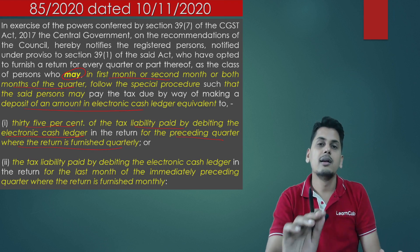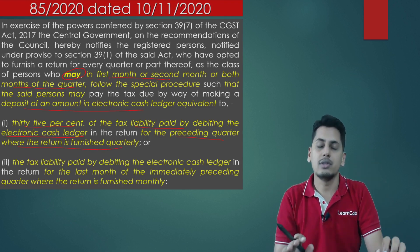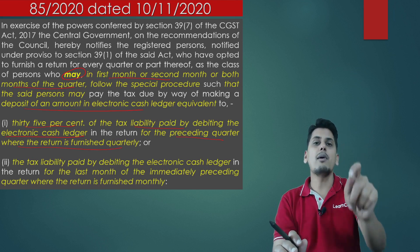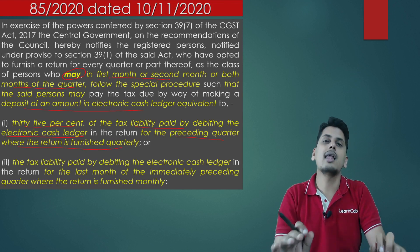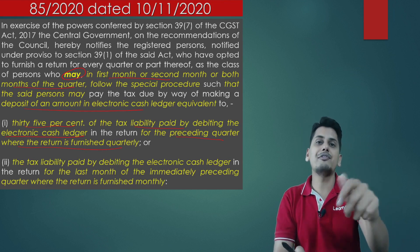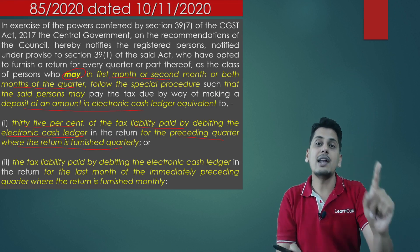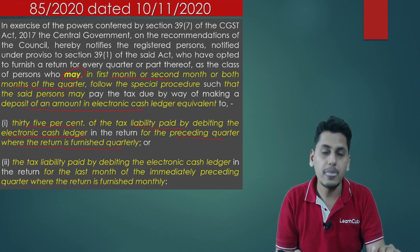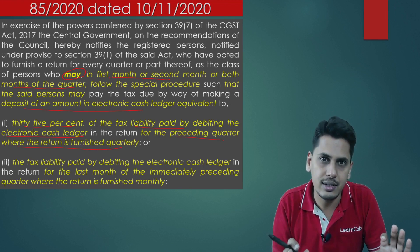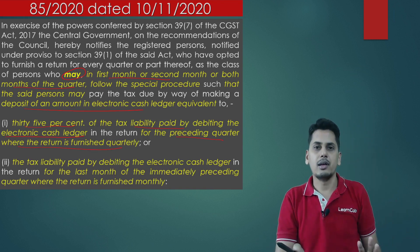They say you follow a historical method. For the preceding quarter — assuming the current quarter is April, May, June under QRMP scheme — for the month of April, you need to calculate the amount to deposit in the electronic cash ledger. Take the return of the preceding quarter, January, February, March, and find out what amount of tax was paid by debiting the electronic cash ledger. In that quarterly GSTR-3B, total liability minus total input tax credit — the difference you would have paid by debiting the electronic cash ledger.